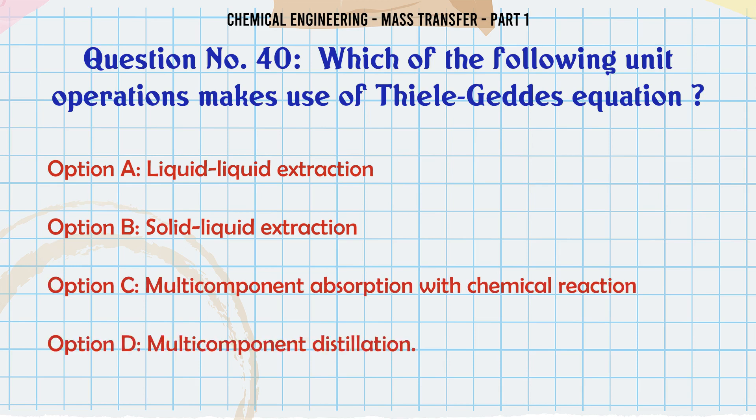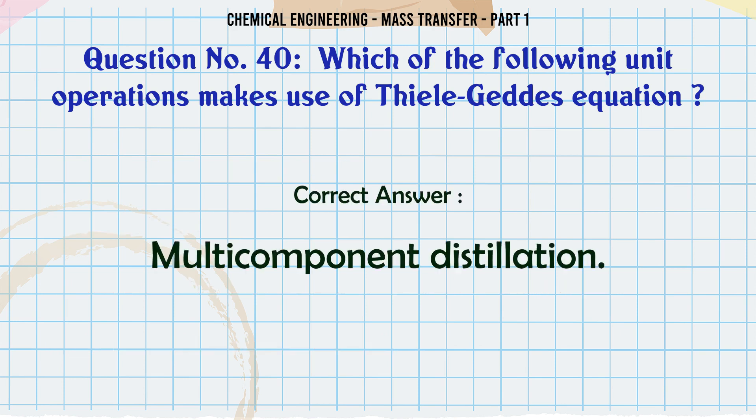Which of the following unit operations makes use of the Thiele-Geddes equation? A. Liquid-liquid extraction. B. Solid-liquid extraction. C. Multi-component absorption with chemical reaction. D. Multi-component distillation. The correct answer is multi-component distillation.